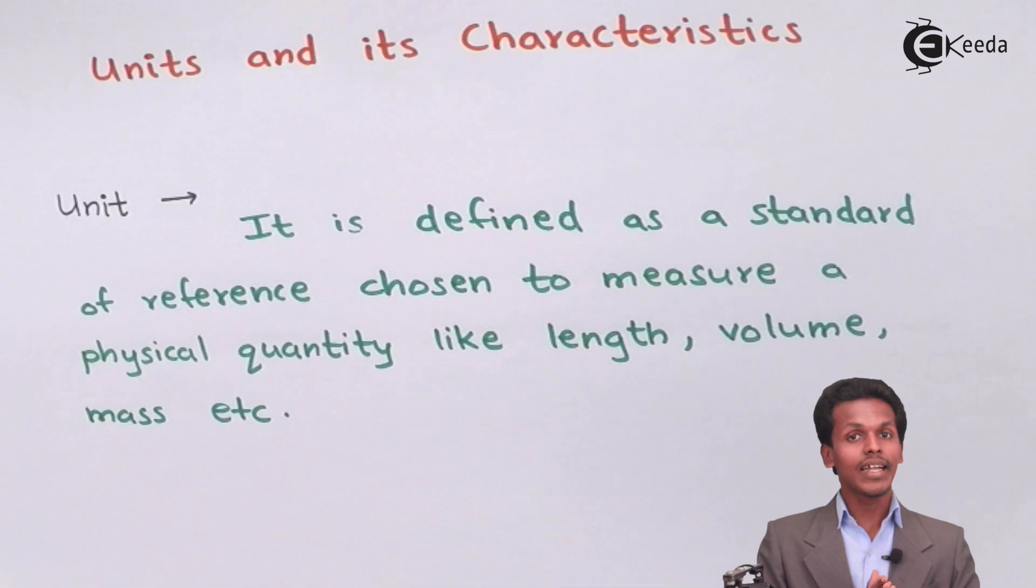So unit basically allows us to measure a particular physical quantity. For example, if we have to measure a particular matter in the form of weight then we use the unit as kg. For length we use centimeter, meter or kilometer, and for volume we use centimeter cube or liter, milliliter.